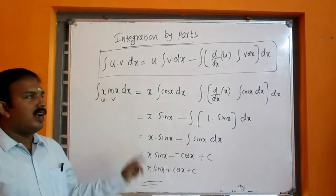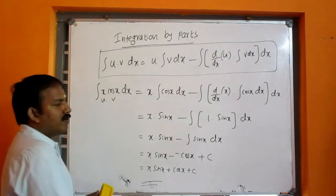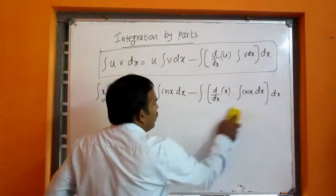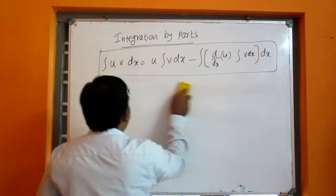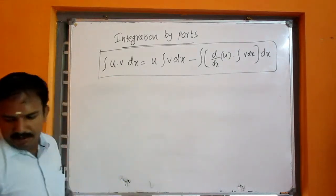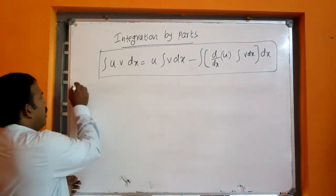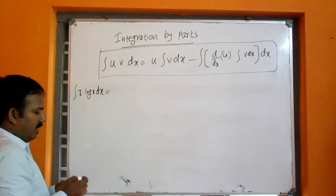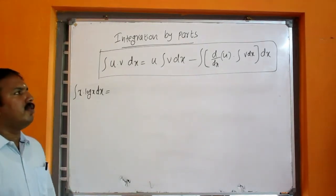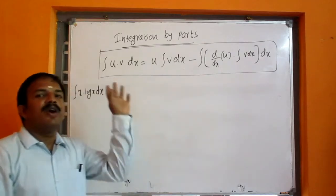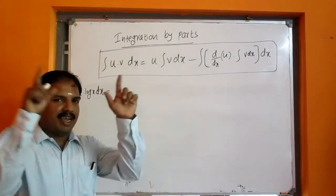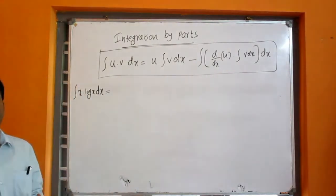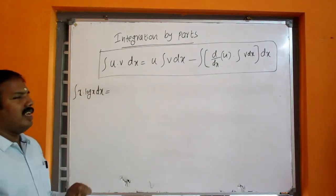Now, we are going to do integral x log x dx. Integral u v dx is equal to u into integral v dx minus bracket — that is, d by dx of u into integral v dx. This bracket is closed with dx.